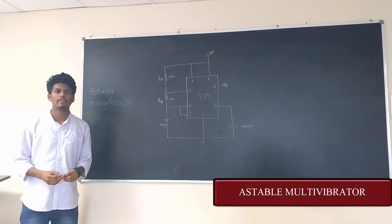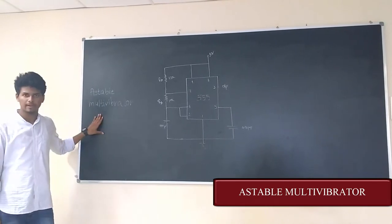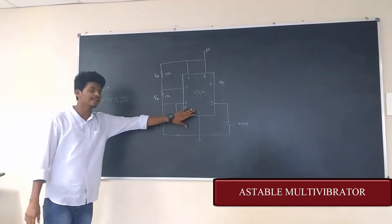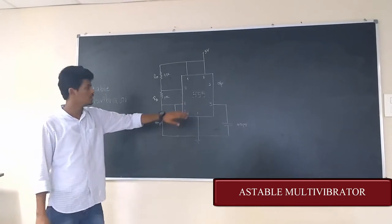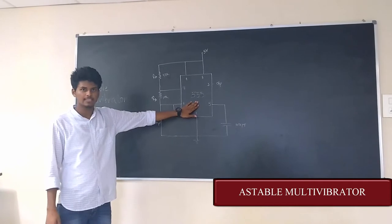Greetings to all. Welcome to CE2 Lab. Now we are going to look into the astable multivibrator. This is the circuit diagram for an astable multivibrator. Here we are using an IC 555, that is a timer IC.